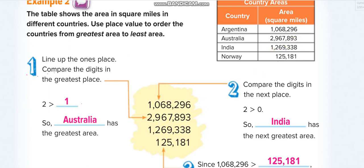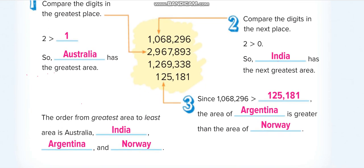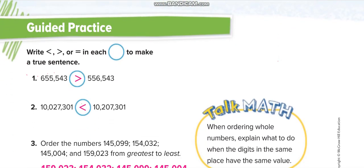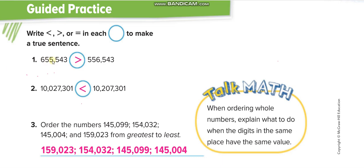Here we write Australia, then India, then Argentina, and Norway. Here they are comparing the numbers. This is the first period, this is the second period. 655,000 and 556,000. We can compare by the first number, so this one is greater. 10 million, 10 million. Here 0 hundred thousand, only 27,000. Here 207,000. So of course this one is greater.